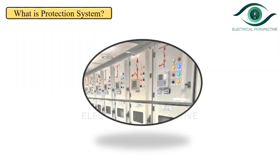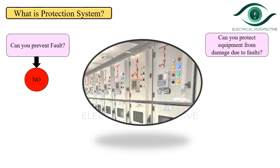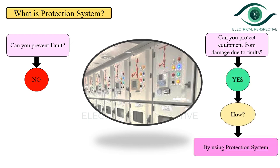The same philosophy is also applicable to the protection system of an electrical power system. Can you prevent the fault? The answer is obviously no. Please note that up to a certain extent, faults can be prevented by using properly designed and maintained equipment. But 100% you cannot prevent the fault, so in general the answer is no. The second question is: can you protect the equipment from damage due to a fault? The answer is yes — by using the protection system.